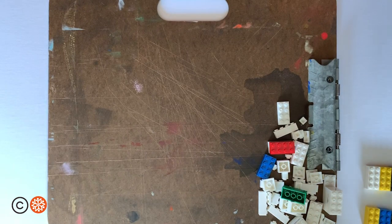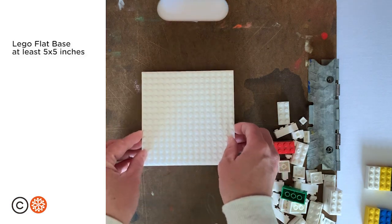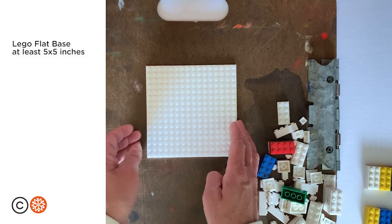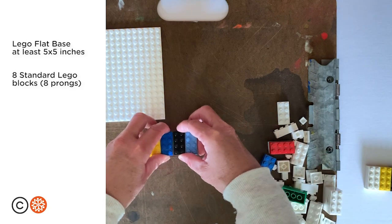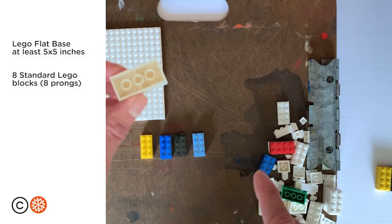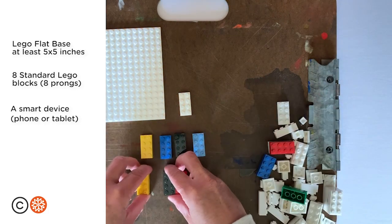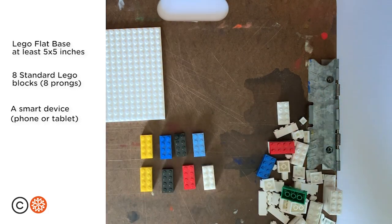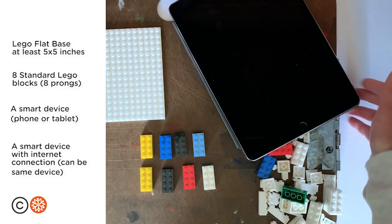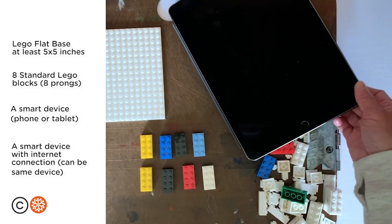Before you get started, gather the materials you will need for this project. You will need one Lego flat base at least five inches by five inches, eight Lego standard sized blocks. These have eight prongs on top and three open holes in the bottom. You will need one smart device, a phone or a tablet, and one device with connection to the internet. This can be the same phone or tablet from above or it can be a TV.